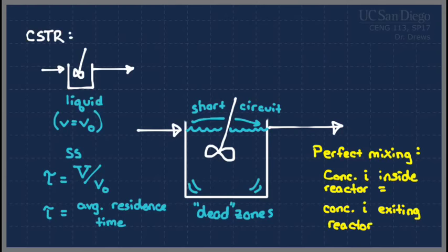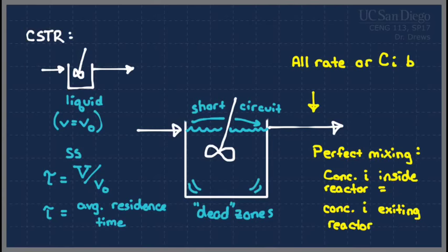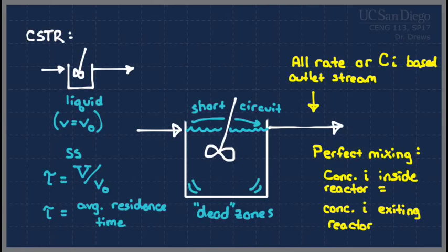What that means is all we need to know — if we're worried about any rate parameters or anything to do with concentration — those are all going to be based on your outlet stream. This is how the CSTR is different from a plug flow reactor. In a plug flow or packed bed, we watch the concentration all the way through the reactor. We can't do that with a CSTR because we assume everything inside the reactor is exactly the same as what came out.